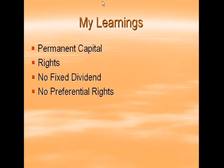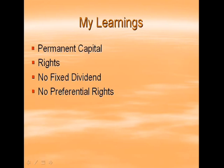No preferential rights. Equity shareholders do not have any preferential rights, unlike preference shareholders. In the case of preference shares, the dividend is fixed and is paid before the dividend is paid to equity shareholders. Equity shareholders are the last to receive the dividend. Out of the profits made by the company, the company first pays interest on external loans, then preference dividend is given, and only after that do equity shareholders get their dividend.